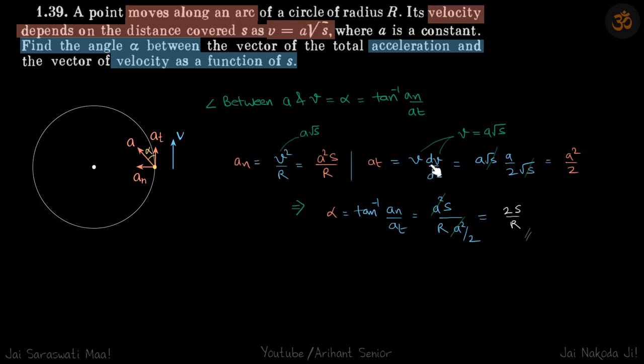Now aₜ is v(dv/ds), and v is a√s. So we got aₜ also in terms of s. Actually s will get cancelled and it will be a constant, a²/2.